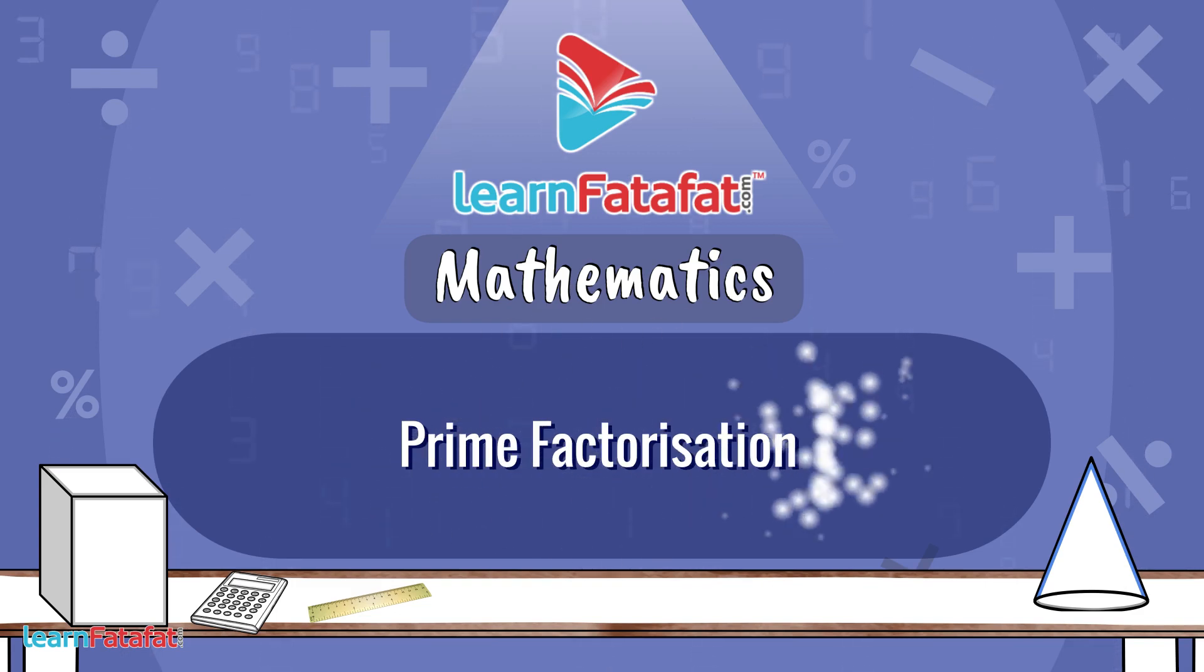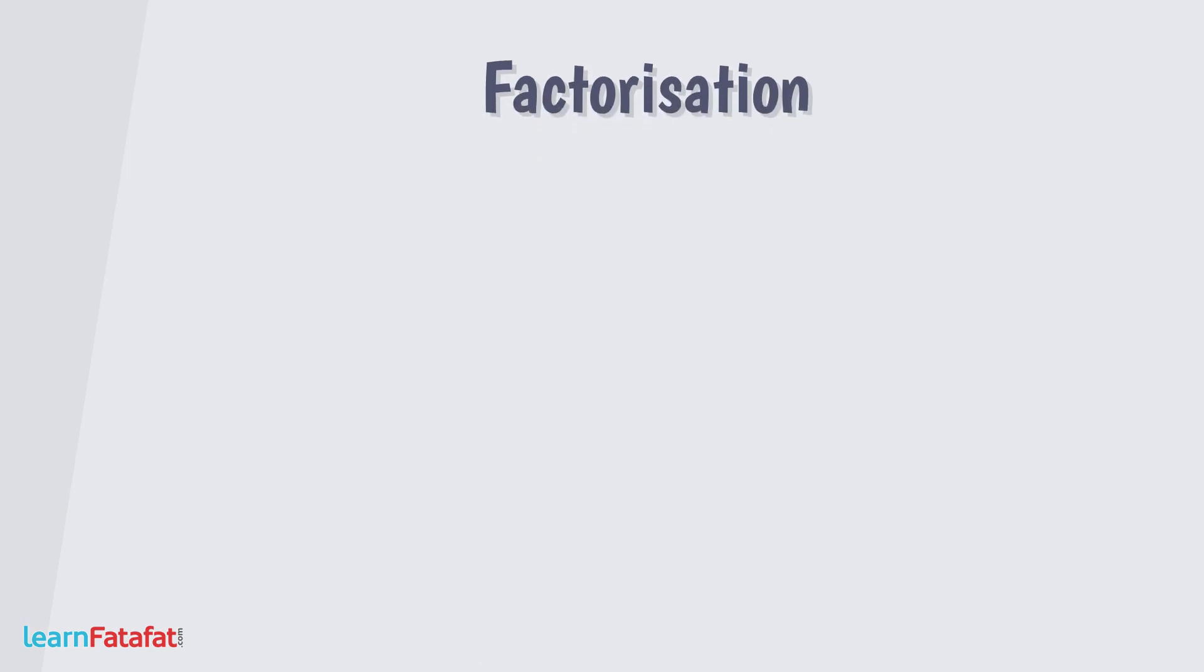Prime Factorization. Factorization is basically representation of a number as product of factors. So here is a number whose factorization can be written like this. We can further break 30 as product of these numbers. Further, these numbers can also be broken as product of these two numbers.